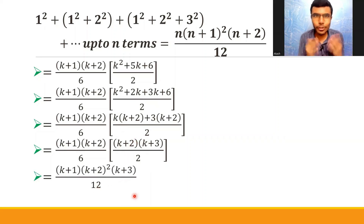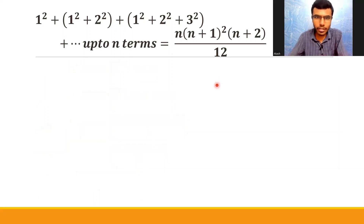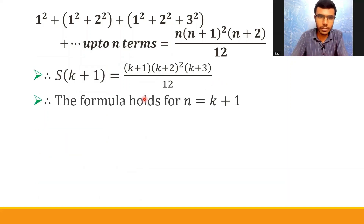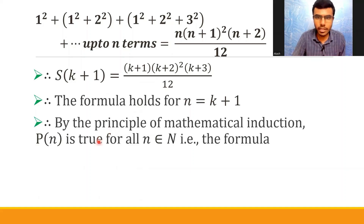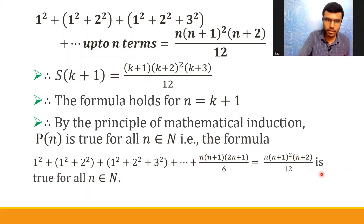This is exactly what we had to prove — S(k+1) = (k+1)(k+2)²(k+3)/12. Therefore, the formula holds for n = k+1. Therefore, by the principle of mathematical induction, P(n) is true for all n belonging to the natural numbers.